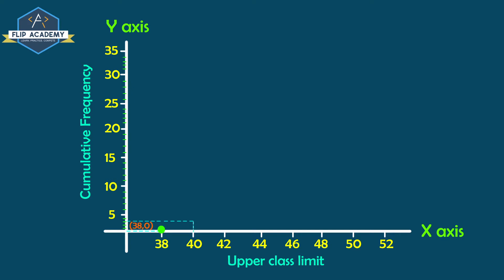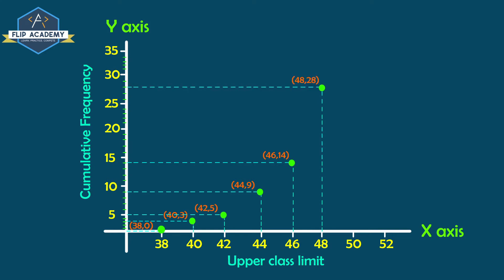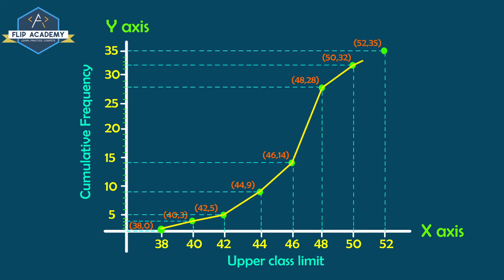Plotting all points: (40, 3), (42, 5), (44, 9), (46, 14), (48, 28), (50, 32), and (52, 35). Joining these points gives the required ogive for the less than type cumulative frequency table.